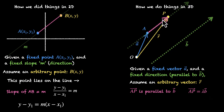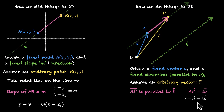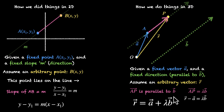Now what's AP? That's R vector minus A vector. So R vector minus A vector equals Lambda B vector. This is the equation of the line in vector form. If we rearrange it, we get R vector equals A vector plus Lambda B vector. So whenever we know a point through which the line passes and a vector parallel to the line, the equation is simply A vector plus Lambda B vector.